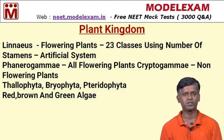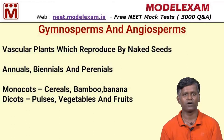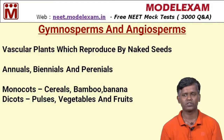Algae are responsible for a large number of chief producers in water bodies. Gymnosperms correspond to vascular plants that reproduce by naked seeds. Angiosperms are all flowering plants and can be divided into three categories: annuals, which survive for one year; biennials, which survive for two years; and perennials, which survive throughout the year.